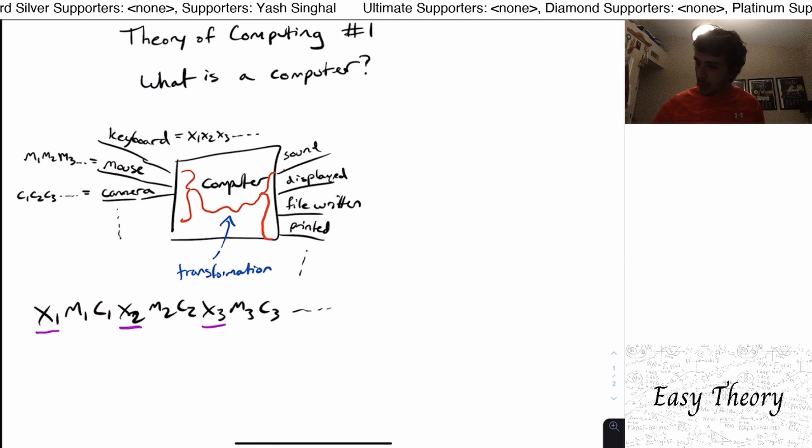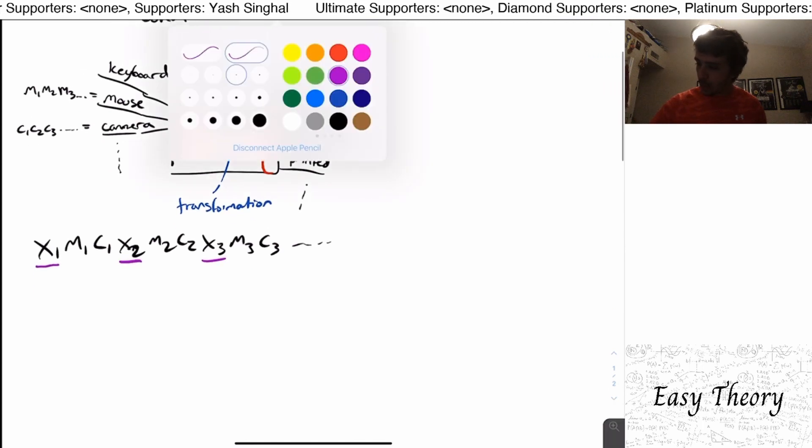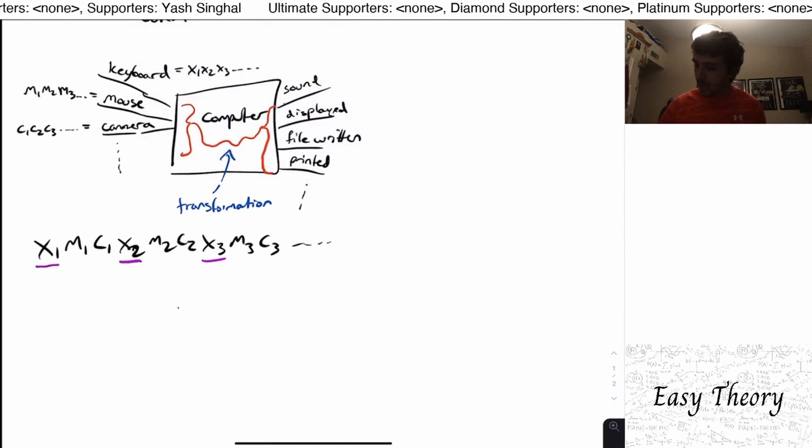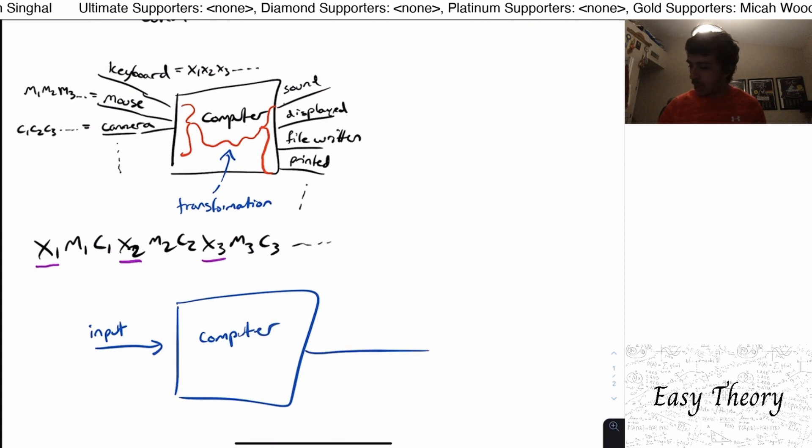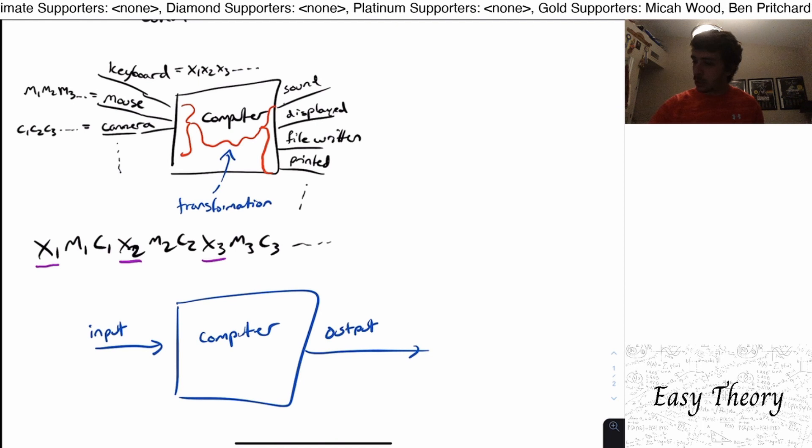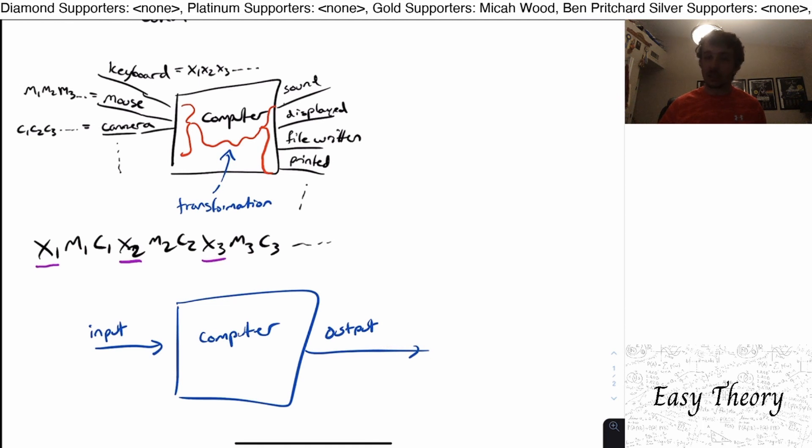So we can amend our notion of what a computer really fundamentally is to a singular input being fed into the computer. So we still have a computer here, we haven't changed that. And we have a singular output. So we're given a particular input string, we do some process, and we are outputting a string.